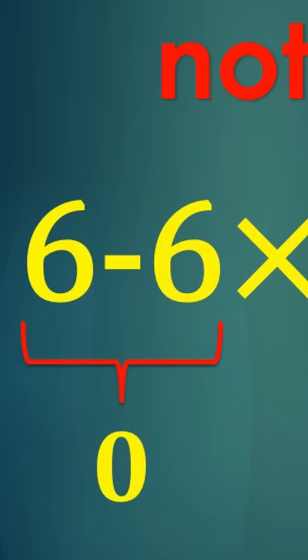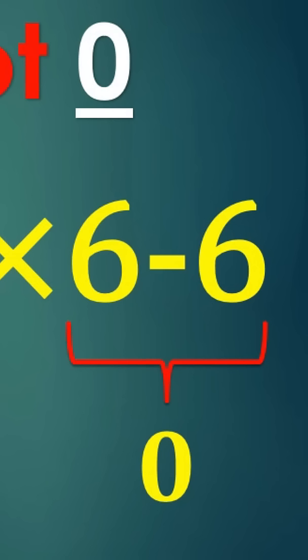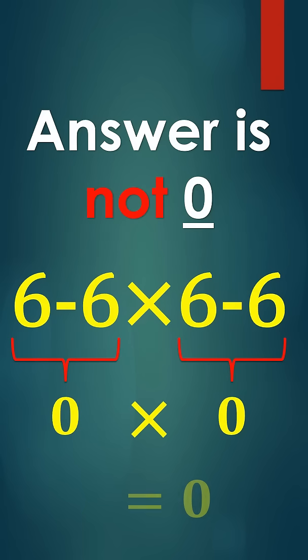Six minus six equals zero, then six minus six again gives zero, and zero times zero equals zero. But that's not correct. Let's take a look at the right way using the order of operations, also known as PEMDAS.